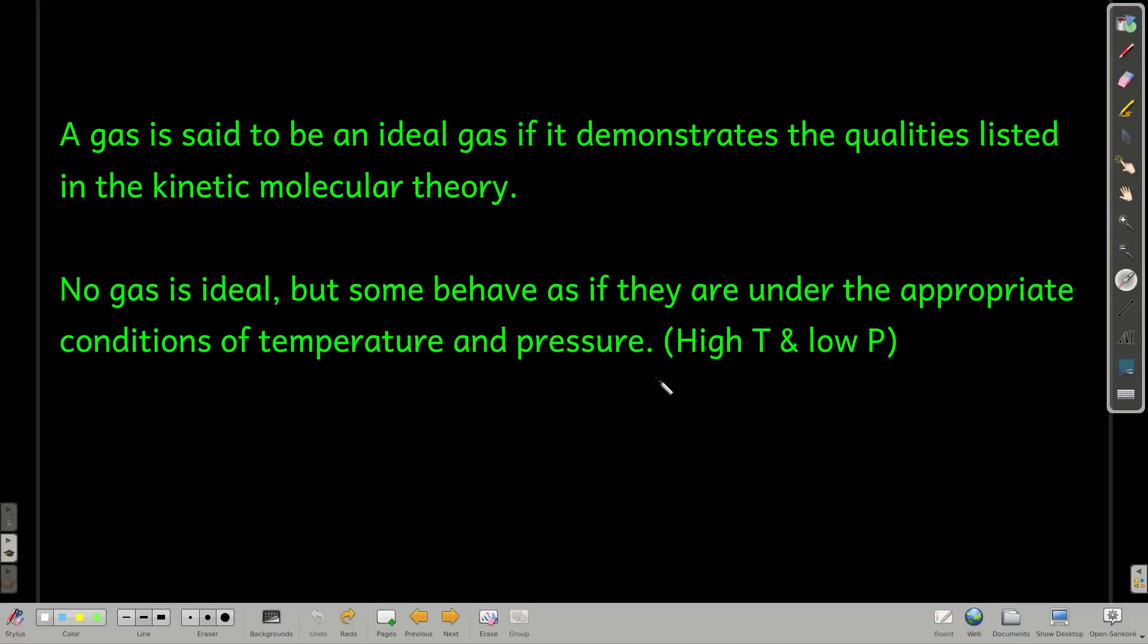The conditions where we get the best or the most ideal behavior, in other words, where the gas acts most like we said in the kinetic molecular theory is if it's at a high temperature and low pressure. You should remember that. Because when they're at a high temperature, that means the gas particles are moving fast. And that means as they pass by each other, they don't have time to really interact. And low pressure means there aren't very many gas particles in a given volume, which means the actual volume taken up by them is really pretty small, the percent of the volume.